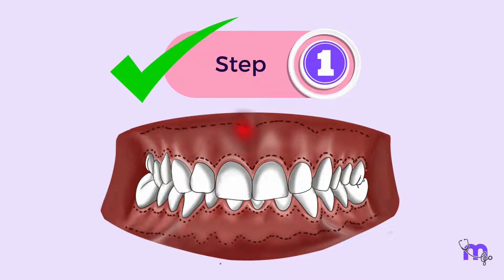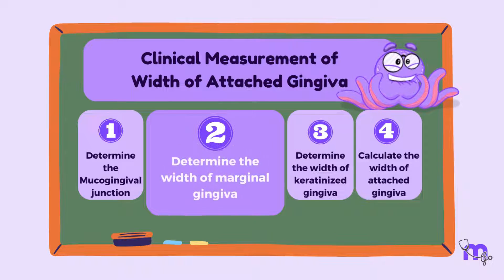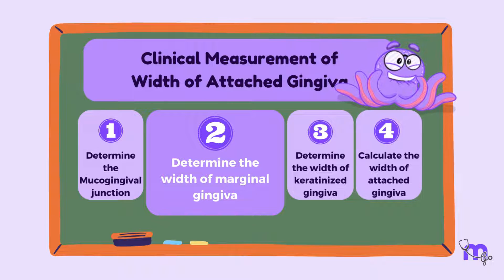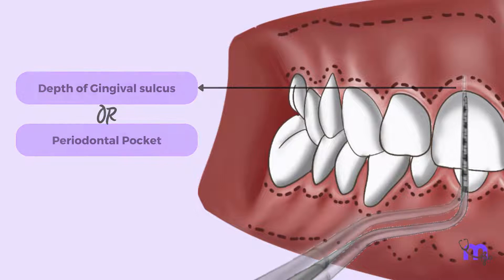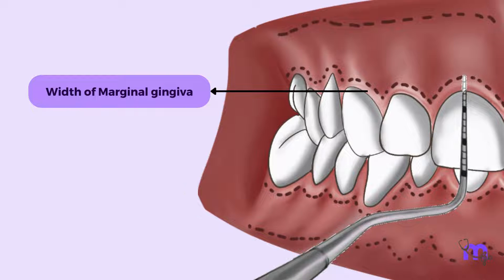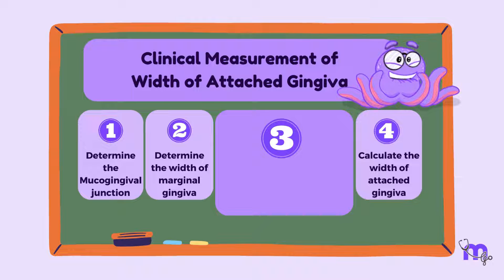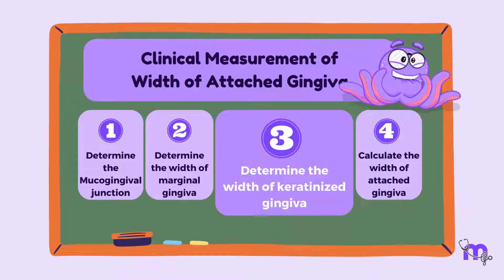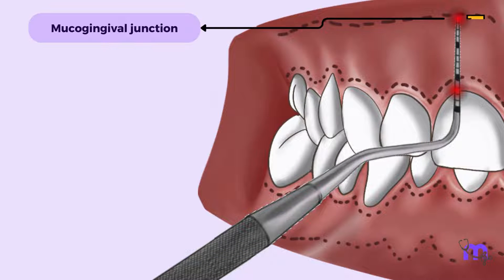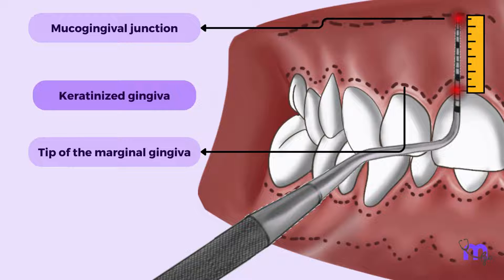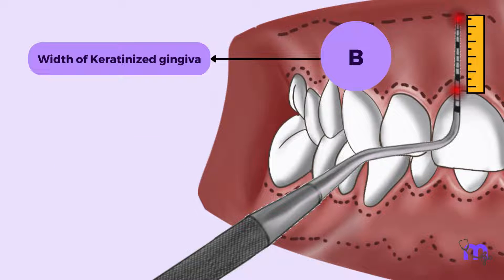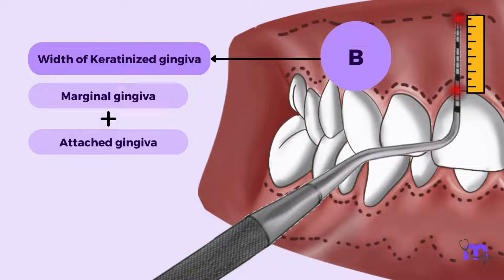Once we determine the mucogingival junction, we move on to step 2, which involves determining the width of the marginal gingiva. The depth of the gingival sulcus or periodontal pocket is measured using a periodontal probe. This is the width of the marginal gingiva, noted as A, as seen in the image before you. From here, we proceed to step 3, which involves determining the width of the keratinized gingiva. The distance between the mucogingival junction and the tip of the marginal gingiva is measured. This is the width of the keratinized gingiva, noted as B in the image before you. This distance covers the marginal gingiva and attached gingiva, both of which are lined by keratinized epithelium.